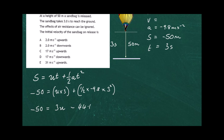Substituting in the values: minus 50 equals u times 3, plus one half times minus 9.8 times 3 squared. Multiplying out the brackets and rearranging gives us minus 50 equals 3u minus 44.1.